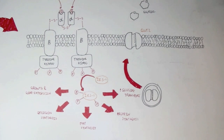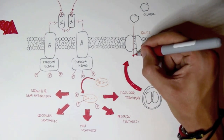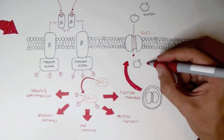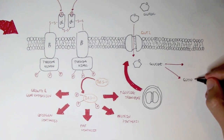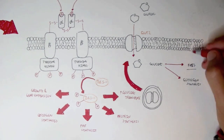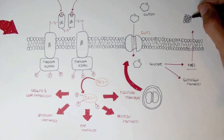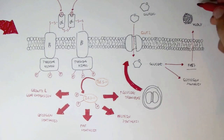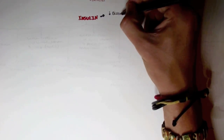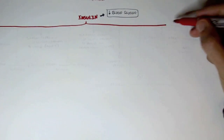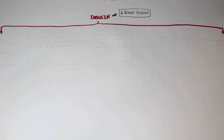Other organs have different GLUT transporters — for example, muscle has GLUT4. The increased expression of GLUT2 transporters increases the absorption of glucose from the bloodstream into the liver. Glucose inside the liver can then have a number of fates: it can be stored as glycogen via glycogen synthesis, or it can be converted to fats packaged as VLDLs (very low density lipoproteins) and exported to adipose tissue for storage. In summary, insulin lowers blood glucose levels and stimulates the absorption and storage of excess energy.